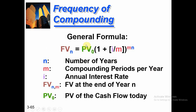Here is the general formula for frequency of compounding: FV(N) equals PV₀ multiplied by (1 plus i divided by M) raised to the power of M times N. FV is your future value, N is your time period, PV is the present value of your deposits, i is your interest rate, and M is your compounding period per year.